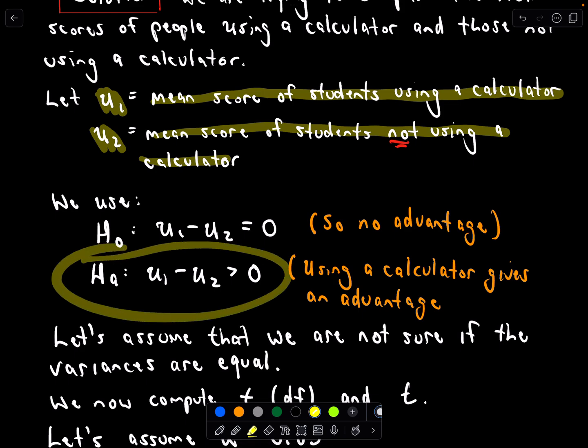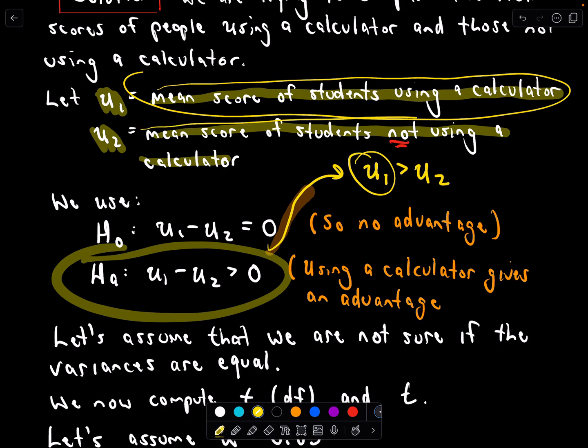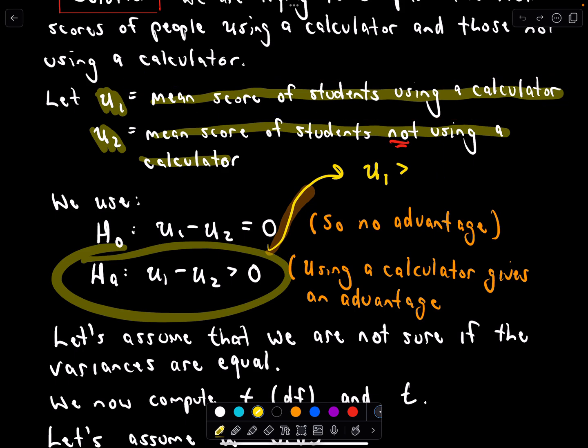And then if we look at this alternative hypothesis μ1 minus μ2 greater than zero, notice we could turn that into the statement that μ1 is greater than μ2, and I think that would probably be a lot of our guesses for an alternative hypothesis. It's that the mean score of the students using a calculator is higher than the mean score of students not using a calculator. That to me would be a very normal alternative hypothesis because that's what I would think. I think most people would say yeah a calculator is going to give you an advantage.